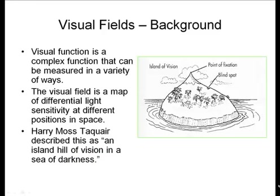Visual fields — let's just go over some background. Visual function is a complex thing that can be measured in a variety of ways. One can think of the visual field as a map of differential light sensitivity of different locations or positions in space. Harry Mastakir described this as an island hill of vision in a sea of darkness. You can picture a little island on the ocean — the ocean being the sea of darkness, the island being areas of sight, and the higher up the island you go, the more light sensitivity you have.